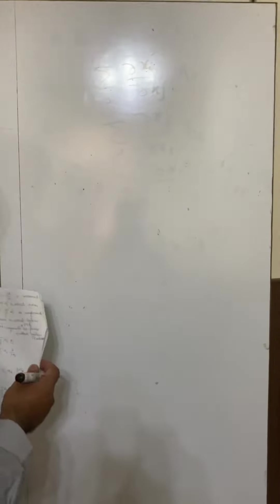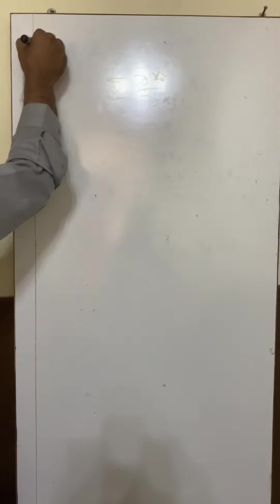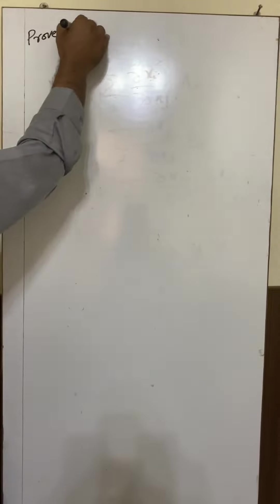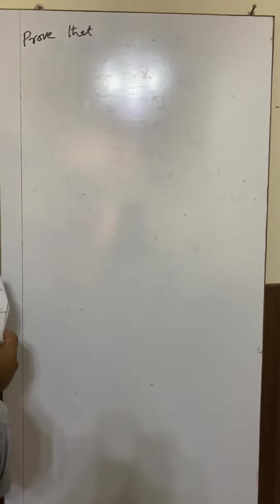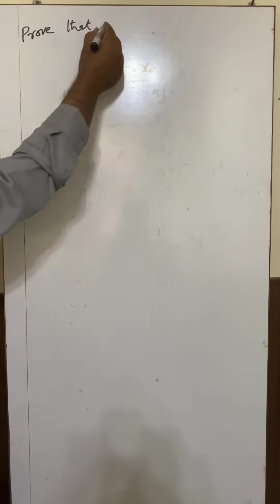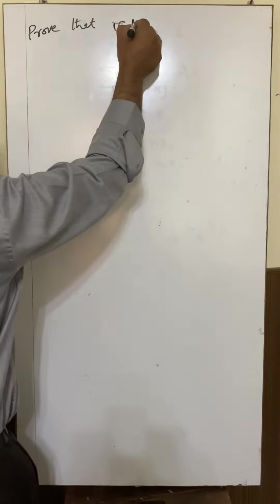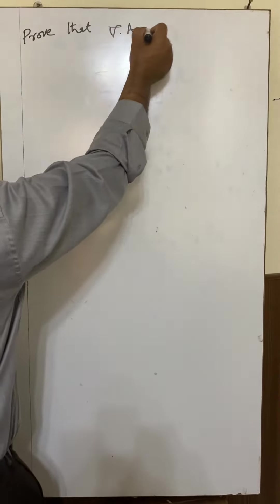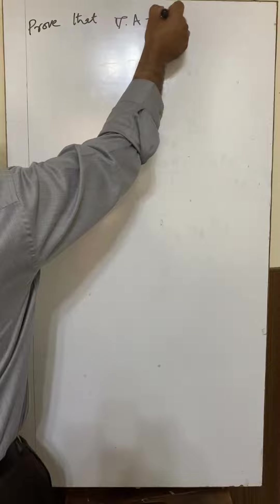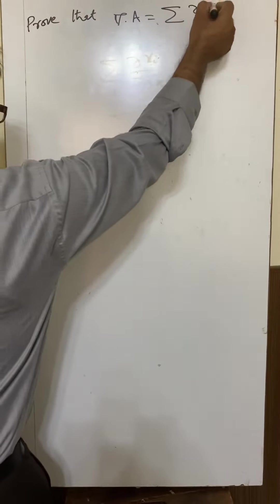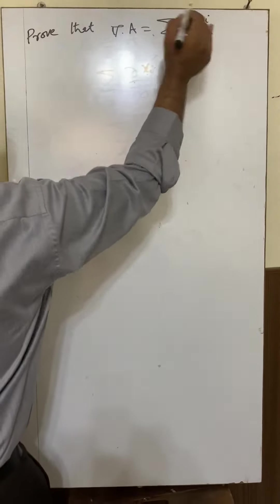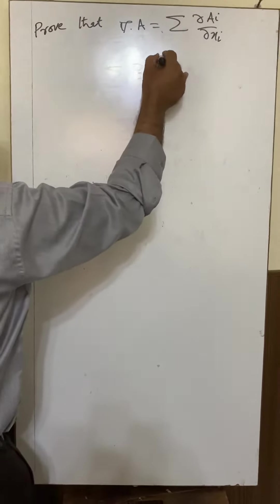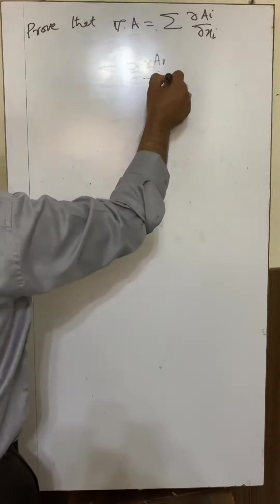The next question is to prove that the divergence of a vector point function, del dot A, equals summation partial A_i over partial x_i, which means partial A_1 over partial x_1